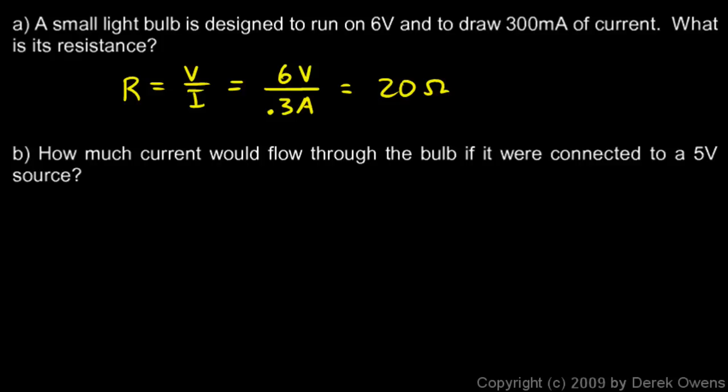Then we're asked, in part B, how much current would flow through the bulb if it were connected to a 5 volt source. So now we're trying to find how much current. So we'll use the equation like this, I equals V over R. And in this case, it's connected to a 5 volt source. So the voltage in this case is 5 volts. And the resistance here, we know because we just calculated it. So we'll put in the 20 ohms. 5 volts divided by 20 ohms comes out to 0.25 amps.